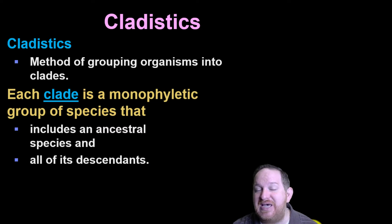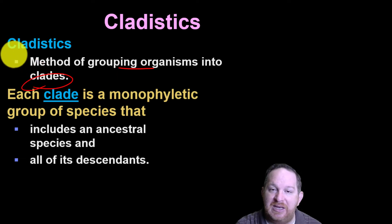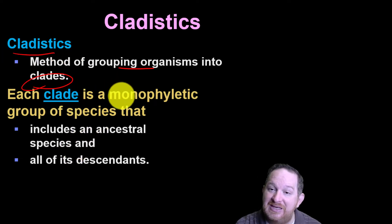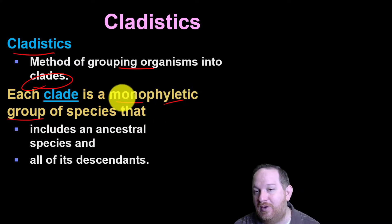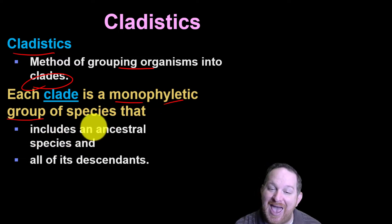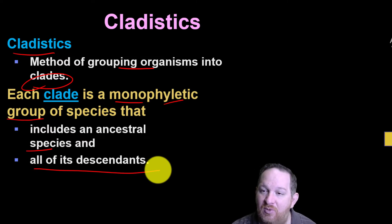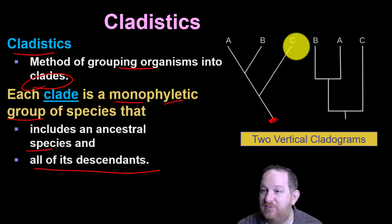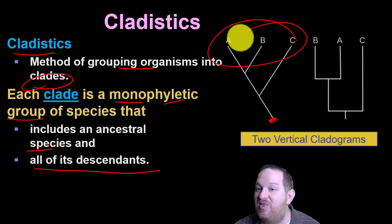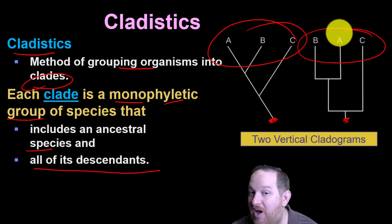Cladistics is another term for grouping organisms into a clade. A clade is a monophyletic group of species. Monophyletic just means an ancestor species and all of its descendants. So if here is an ancestor species and these are all of its descendants, that's a monophyletic clade. Same thing here: if this is an ancestor species and these are all the descendants, that's a monophyletic clade.